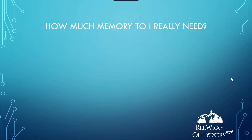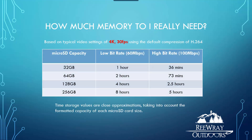So armed with all this information, let's talk about how this translates into how much memory you really need. Assuming 4K at 30 frames per second using the default H.264 compression: a 32GB microSD card, after it's formatted, will give you about 1 hour of video at a low bit rate, and about 36 minutes at a high bit rate. You can simply double these numbers when you go to 64GB, 128GB, and 256GB. These time storage values are close approximations and do take into account the formatted capacity of each microSD card.